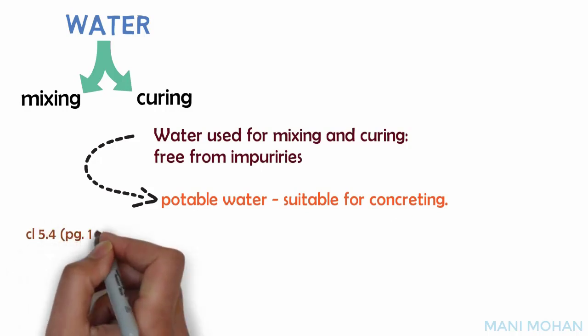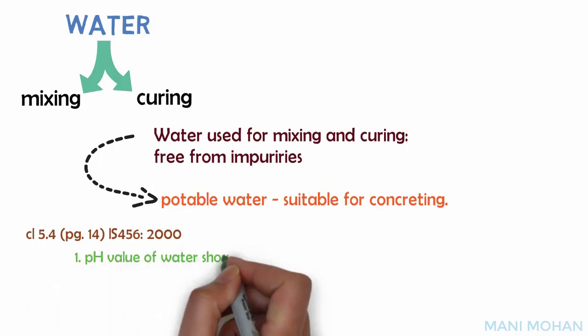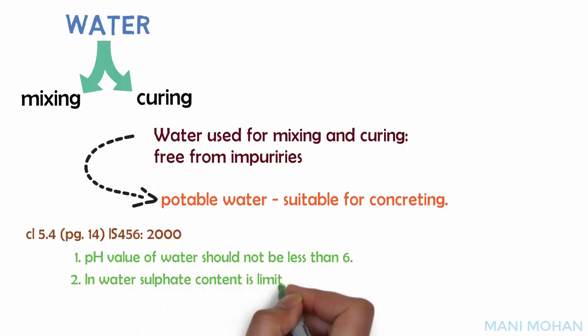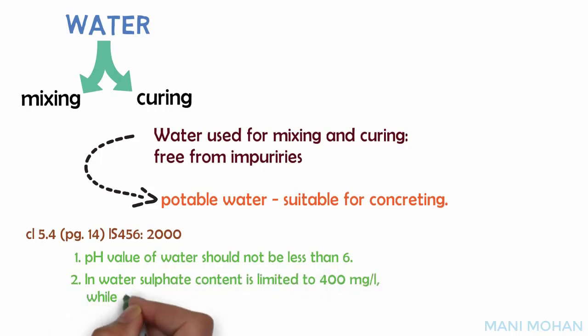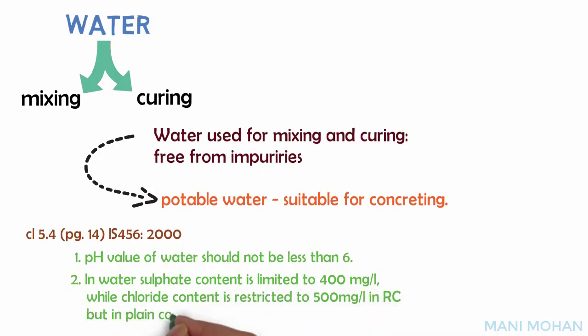Page 14 of IS 456-2000 gives recommendations on quality of water to be used for concreting. Important points to consider: (1) pH value of water should not be less than 6. (2) Sulfate content in water is limited to 400 mg per litre, while chloride content is restricted to 500 mg per litre in reinforced concrete but 2000 mg per litre in plain concrete.